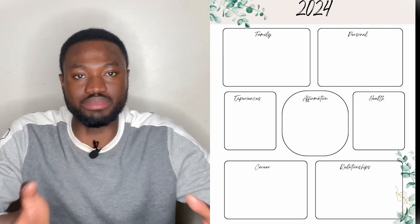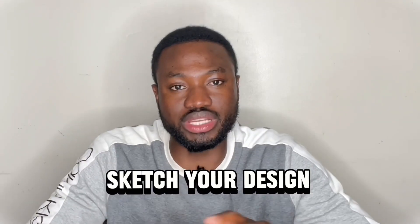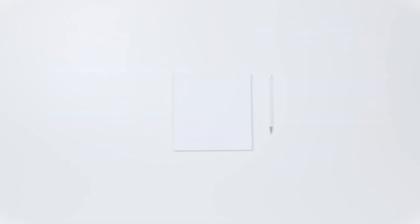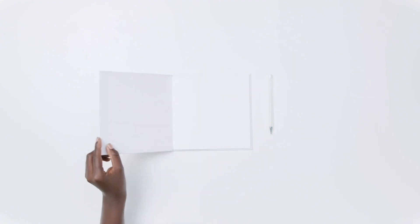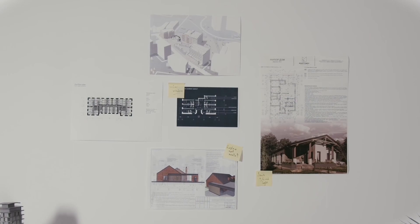Sketch your design — take a moment to sketch an outline of your vision board. You can start with a sketch pad and try to envision how you want your goals and aspirations to be represented on the board. It doesn't have to be a masterpiece, but it serves as a visual guide that will be translated into the main vision board.